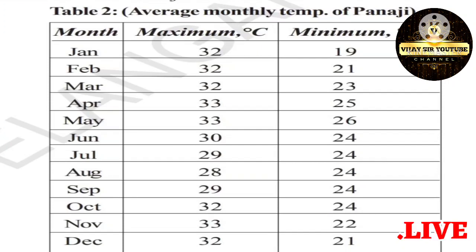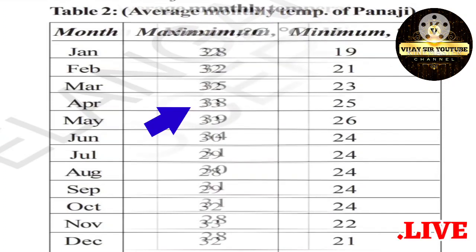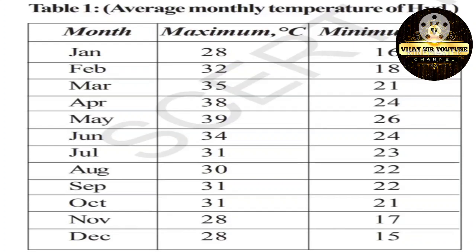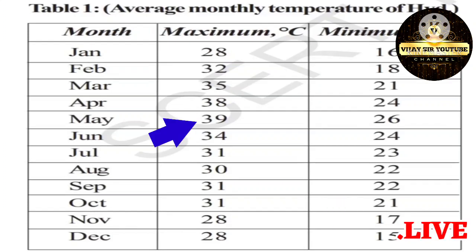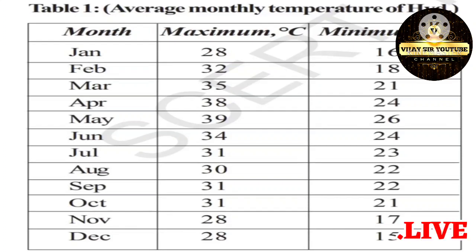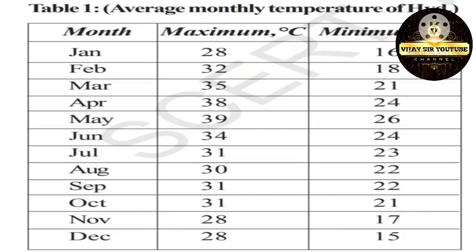Hyderabad is not close to the sea — it is far away, which is why it has different temperatures. Panaji is very close to the sea, which is why it maintains constant temperatures. If you observe Panaji, the minimum temperature is 19 degrees and maximum is 33 degrees — the difference is 14 degrees. For Hyderabad, the minimum temperature is 15 degrees and maximum is 39 degrees — the difference is 24 degrees. So Hyderabad has 10 degrees extra variation compared to Panaji.